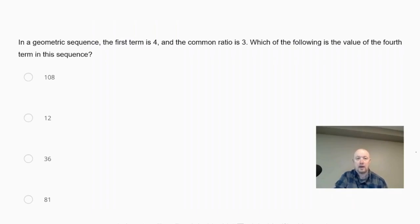All right, so the first thing we notice is geometric sequence. Geometric means that we are using a common ratio. And the common ratio in this case is 3. So geometric sequence, we're going to multiply to get the sequence. It says that the first term is 4, so that means the second term in the sequence, since it's geometric, we're going to multiply, so we're going to get 12.